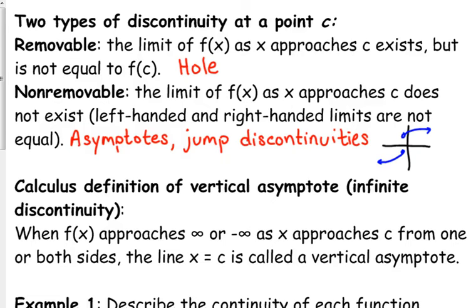Let's talk about continuity. I kind of talked a little bit yesterday about the removable discontinuity — we more frequently refer to that as a hole. If you think about it, 'removable' means you've just removed one single point. They use the terms removable and non-removable, so you need to know the difference between those two. Non-removable are asymptotes and jump discontinuities.